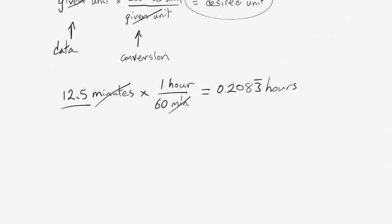Your 12 and a half minutes is a measured value with three significant figures. You're multiplying it by a 1 and a 60. Those are exact values. It's an exact defined conversion. So your final answer has to have three significant figures. So 0.208 hours.